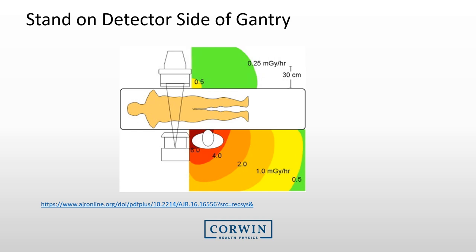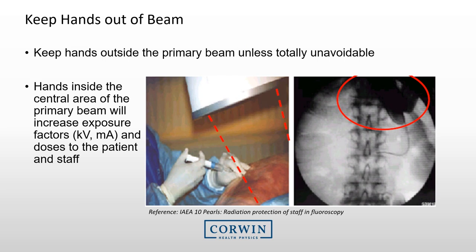From a top-down view, when x-rays pass through the patient toward the detector, backscatter returns toward the operator on the x-ray tube side — making that the highest exposure area, while the detector side is the lowest exposure area. Also, keep your hands out of the radiation beam. When hands enter the beam, the system automatically detects additional material and increases the radiation output — raising radiation exposure both to your hands and to the patient.